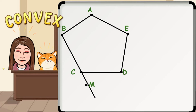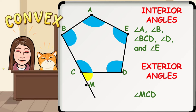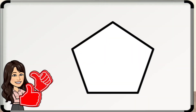Let's have interior angles and exterior angles. An interior angle is an angle inside a polygon. The exterior angle of a convex polygon is an angle that is both supplementary and adjacent to one of its interior angles. In the convex polygon ABCDE, angle A, angle B, angle BCD, angle D, and angle E are the interior angles, while angle MCD is an exterior angle.